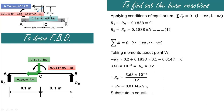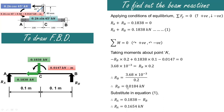Substituting Rb into equation 1: Ra = 0.1838 − Rb = 0.1838 − 0.0184 = 0.1654 kN. So Ra is 0.1654 kN and Rb is 0.0184 kN. Using these values we can draw the shear force diagram.